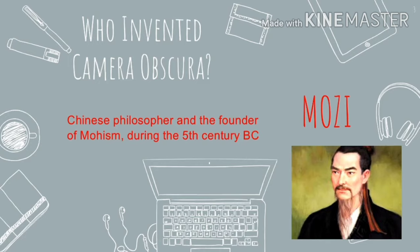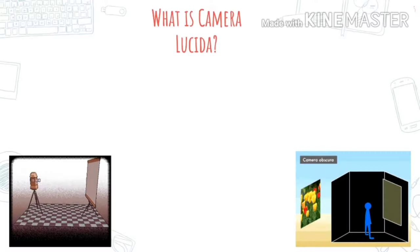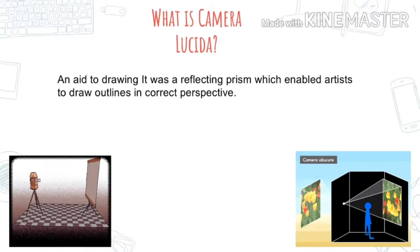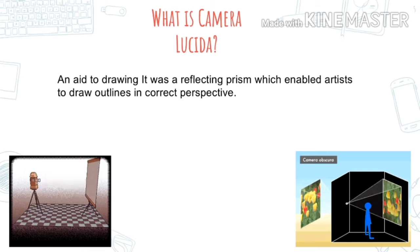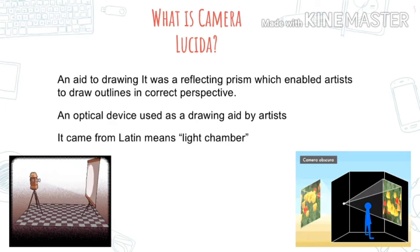The Camera Obscura is used in a dark place. Next is the Camera Lucida. So what is Camera Lucida? It is an aid to drawing — a reflecting prism which enabled artists to draw outlines in correct perspective. Camera Lucida is an optical device used as a drawing aid by artists. It came from Latin, meaning 'light chamber.'